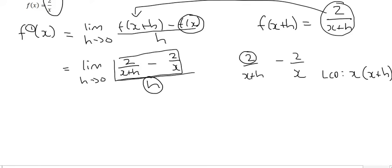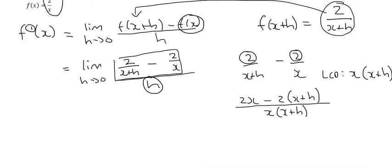This 2 will be multiplied with x, and this 2 with x+h. Then you write both over the common denominator x(x+h). If that's confusing, it's because this is more of a grade 10 topic, and I know some grade 12 students struggle with it.